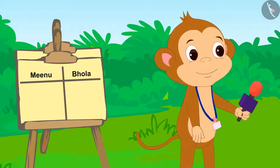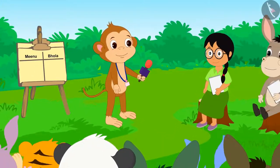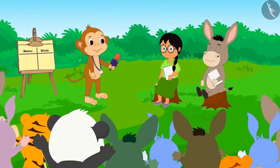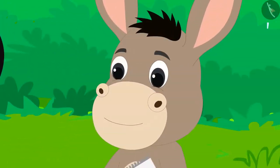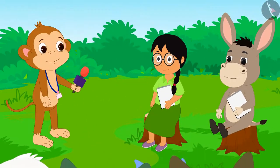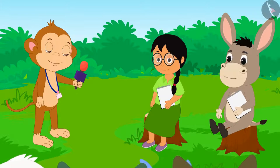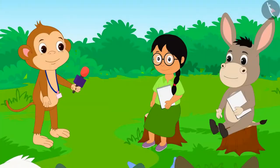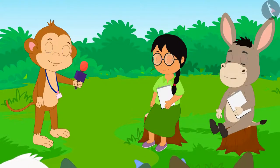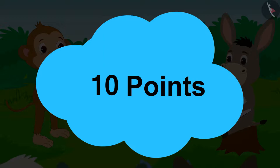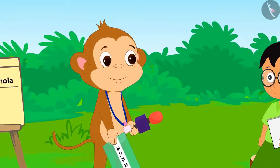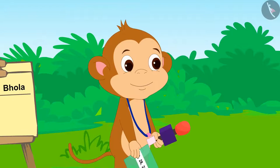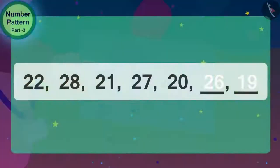Today, a unique game is being played in Champapur. Meenu and Bola have taken part in this game. In the game, both of them have to complete the number pattern. The one who completes the number pattern correctly first will get 10 points. The game's organizer, Babban, showed them both these number patterns.